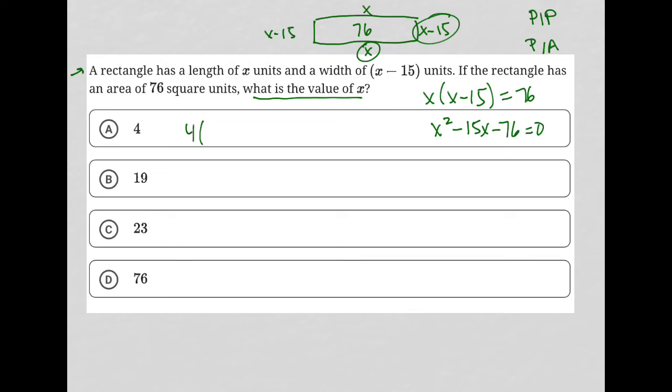For instance, is it true that 4 times 4 minus 15, just replacing x with 4, is it true that that's equal to 76? Definitely not, because this becomes a negative number, so that's gone.